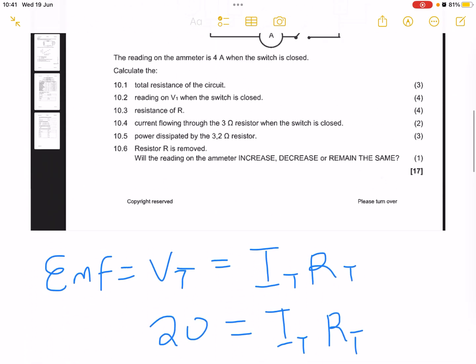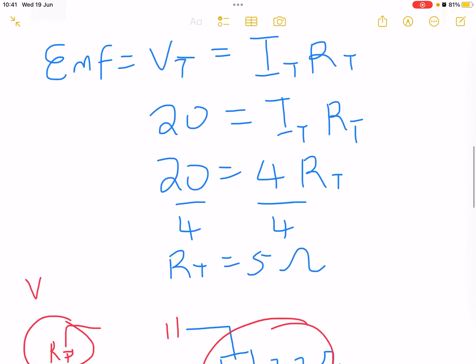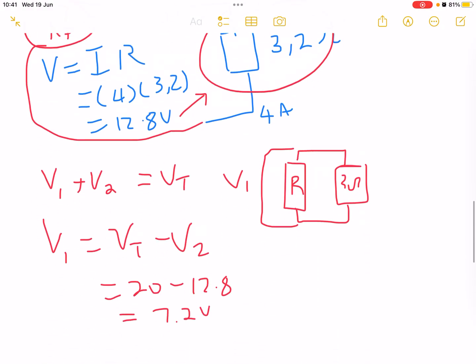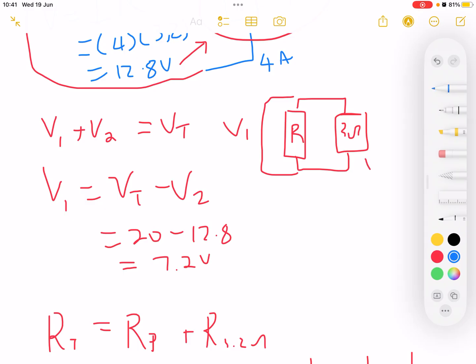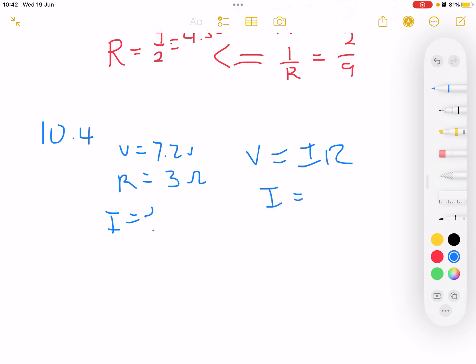10.4 wants us to calculate the current flowing through the 3 ohm resistor. In the 3 ohm resistor, we have the voltage, which is 7.2 volts. Resistance is 3 ohm. We're looking for current. We go to V equals IR, so I equals V over R. Therefore, we're going to say 7.2 divided by 3, which equals 2.4 amperes.